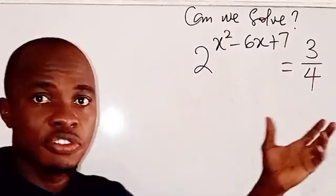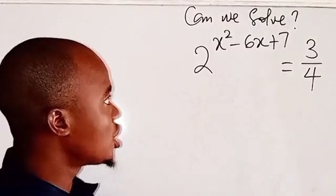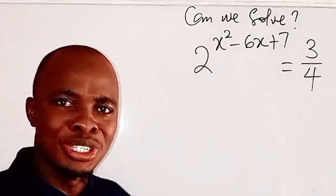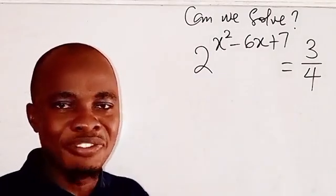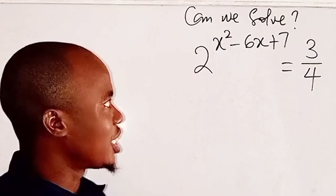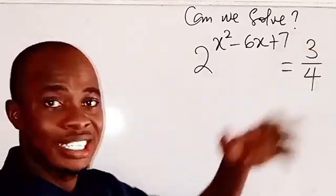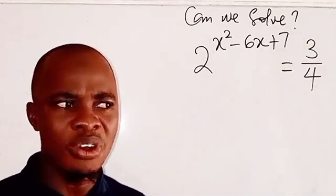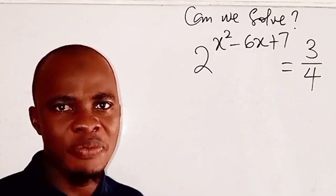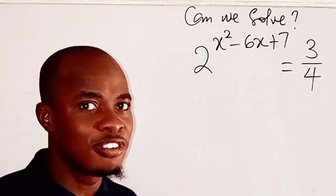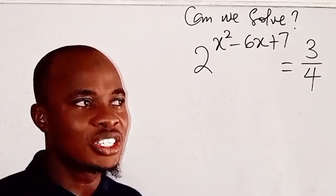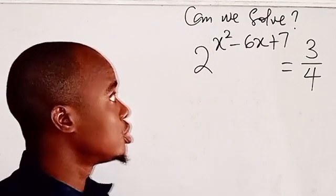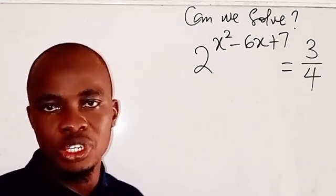Can we solve this beautiful exponential problem? Here we have the power of two to be a quadratic form expression, and the right-hand side equals three over four. How are we going to solve this? It's not hard — you just have to focus.